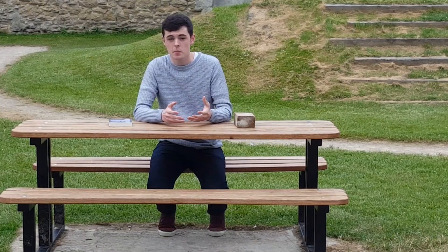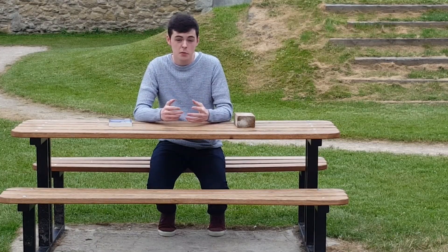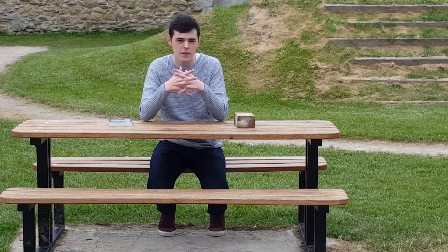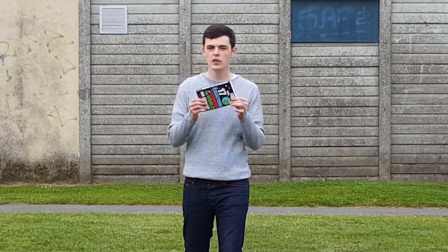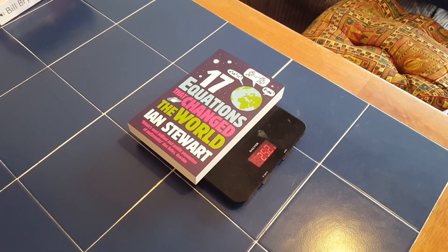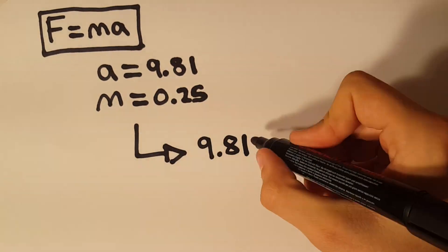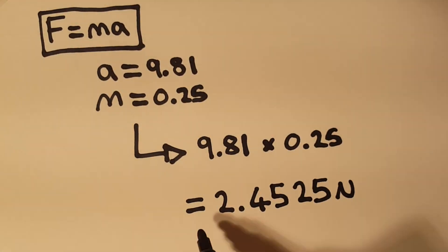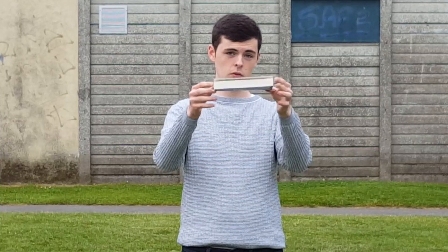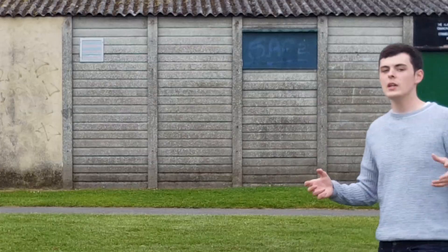So we've seen that we can rearrange the formula to make acceleration the subject, and we've also seen that force is directly proportional to mass. So let's put them together. Our book weighs about 250 grams. We know that the acceleration due to gravity is 9.81 meters per second squared, so multiplying these together, the force acting on this object due to gravity is about 2.4525 Newtons. Now we have everything we need to prove that A will always stay the same, regardless of the mass of the object — that is, they will always fall at the same speed.